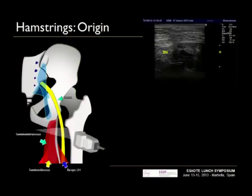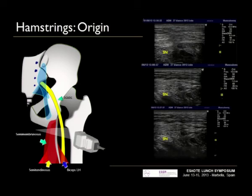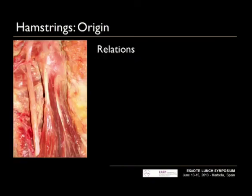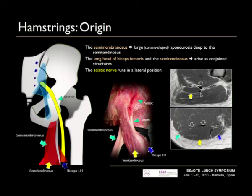If you perform a detailed exam of the upper part of this area, we can see the sciatic nerve — it's a very good landmark — and also the gluteus maximus, the long head of the biceps tendon, the semimembranosus, and how the semitendinosus goes to the medial part. In this MRI, we can see in the more superior part the large common shape of the semimembranosus, and how it grows and goes into the deeper position under the semitendinosus. We can also observe the aponeurosis belonging to the semitendinosus and the aponeurotic tendon that joins the long head of the biceps and semitendinosus muscles, always in relation with the semimembranosus.